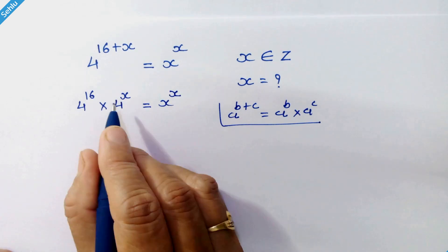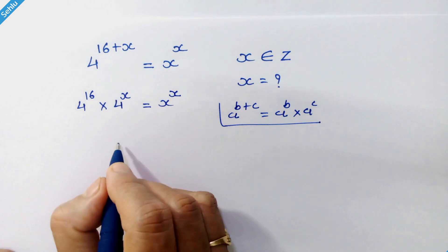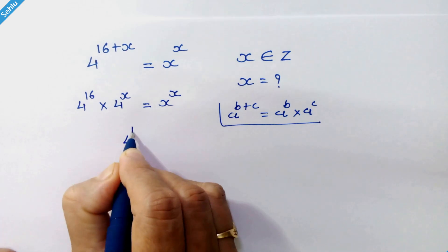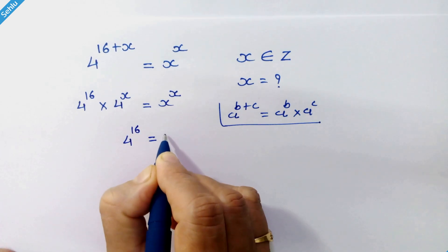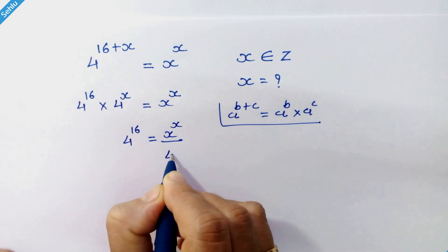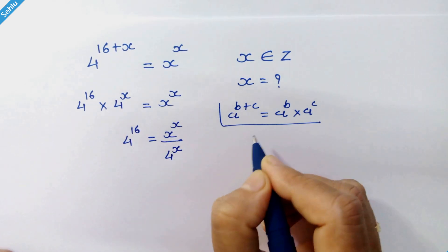Now we'll move 4 raised to x to the right hand side. So we have 4 raised to 16 equals x raised to x divided by 4 raised to x.